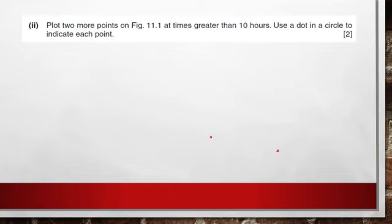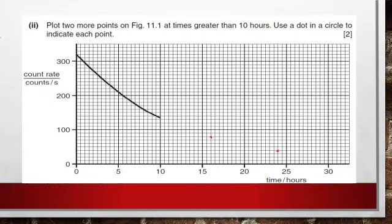Plot two more points on figure 11.1 at times greater than 10 hours. Use a dot in a circle to indicate each point. From 160, if we continue to get half of it, we will have 80. Since the half-life is 8 hours, then from 160 it falls to 80 after 8 hours, which means 16 hours. Continuing the same process after another 8 hours, which means 24 hours has passed, from 80 it falls to 40. So the two dots are placed at 80 counts and 16 hours, and the other one is at 40 counts and 24 hours.